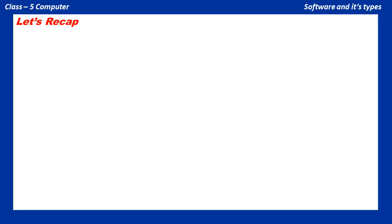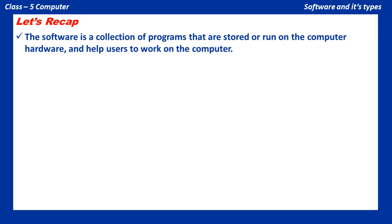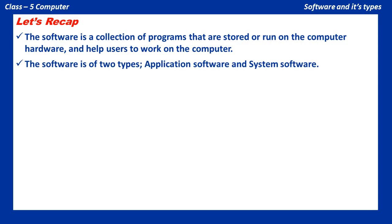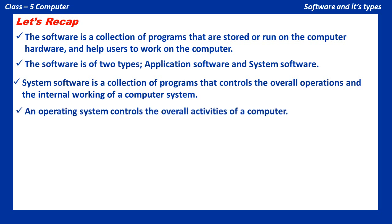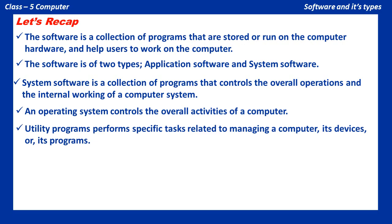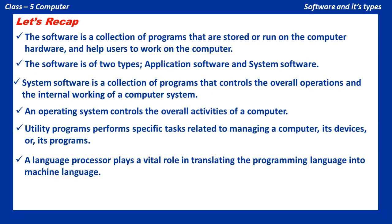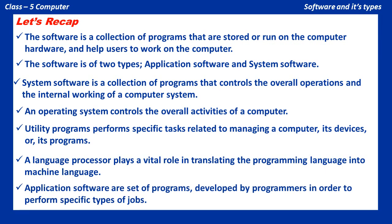Let's recap. The software is a collection of programs that are stored or run on the computer hardware, and help users to work on the computer. The software is of two types: Application Software and System Software. System Software is a collection of programs that controls the overall operations and the internal working of a computer system. An operating system controls the overall activities of a computer. Utility programs perform specific tasks related to managing a computer, its devices, or its programs. A language processor plays a vital role in translating the programming language into machine language. Application Software are a set of programs developed by programmers in order to perform specific types of jobs.